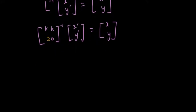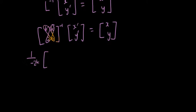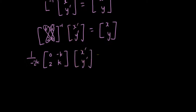Now I'm going to find the inverse of this matrix. It's 1 over the determinant — k times 0 minus 2 times k gives −2k — so 1 over −2k. The two diagonal elements are reversed and the two off-diagonal elements are made negative, giving us the inverse matrix times (x', y') equals (x, y).